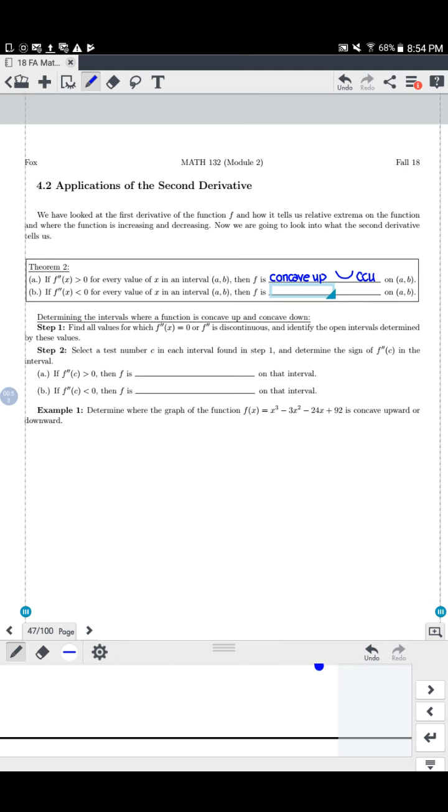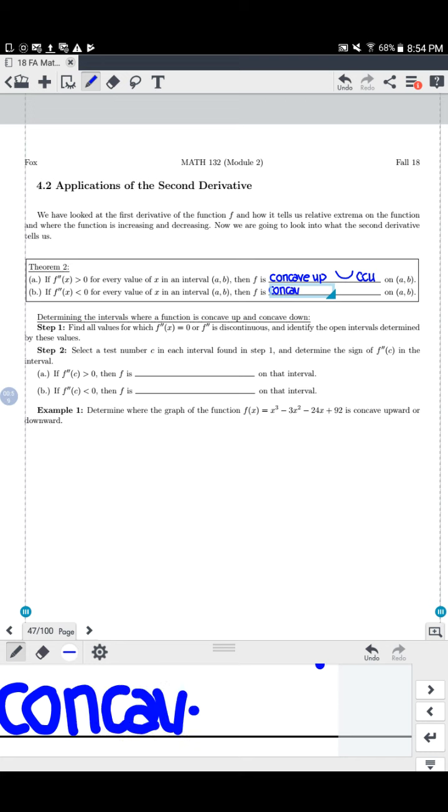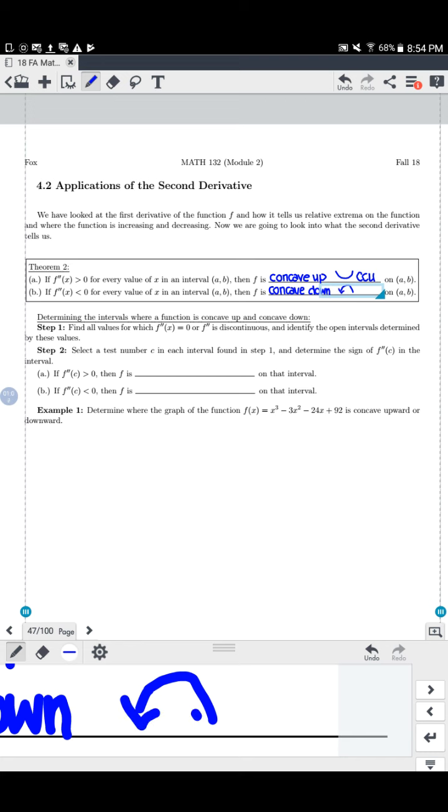If the second derivative is negative on an interval, then the original function f must have been concave down. And that's just going to look like an upside down u. Something like that would be concave down. I'm normally just going to write that as CCD.